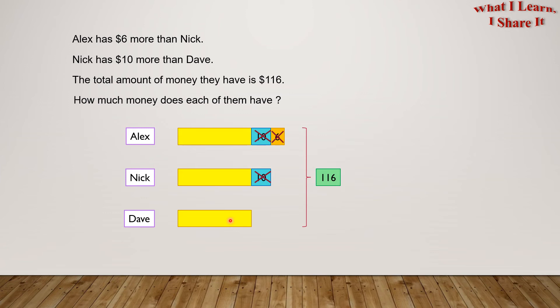But what will happen to the total amount then? The total amount will also get reduced. We will have 116 minus 10 minus 10 minus 6 equals 90.